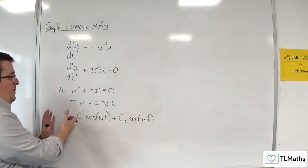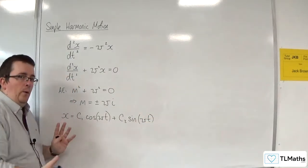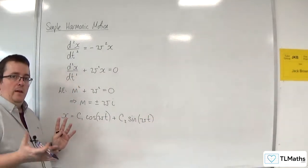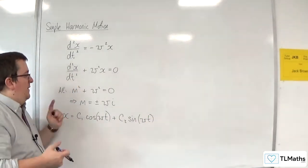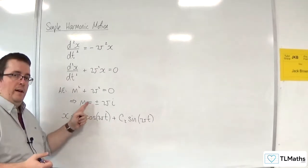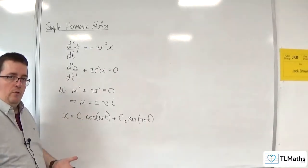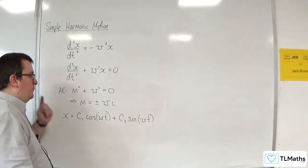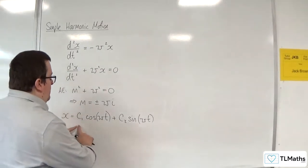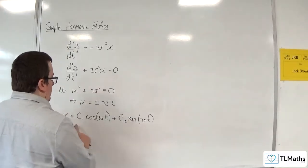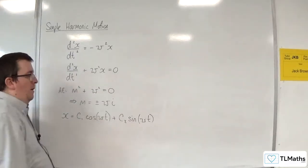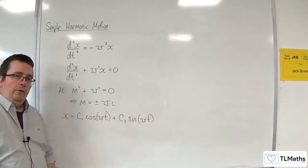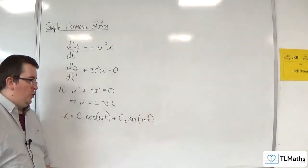Now, of course, usually we'd have e to the power of something times x, but there is no real part here — the real part is 0, so that would just be 1. So this is my general solution.